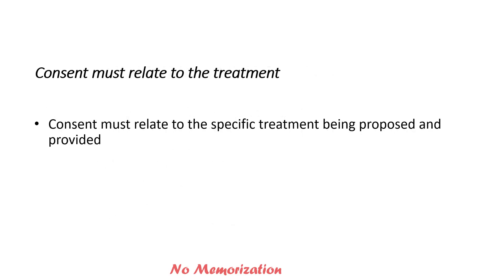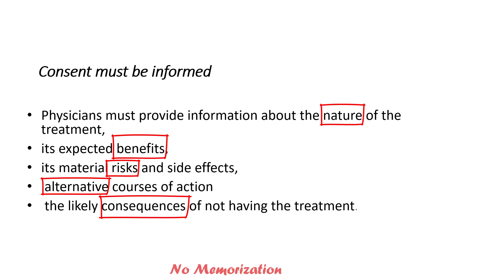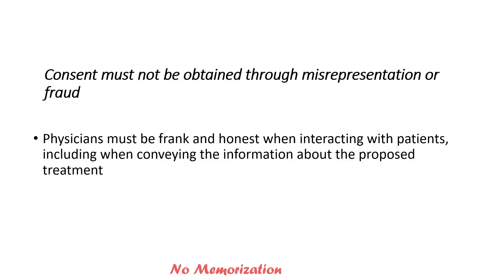A bit more detail about elements of valid consent. Consent must relate to the treatment — that means it must relate to the specific treatment being proposed and provided. After taking consent, if there is no significant difference or adjustment to that treatment, physicians are entitled to presume that consent to the treatment continues. It must be informed: physicians must provide information about the nature of the treatment, its expected benefits, material risks and side effects, alternative courses of action, and the likely consequence of not having the treatment. Consent must be given voluntarily without any pressure of any kind. Physicians must be frank and honest when interacting with patients, including conveying information without any misrepresentation.